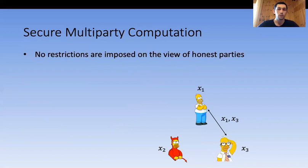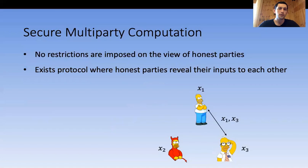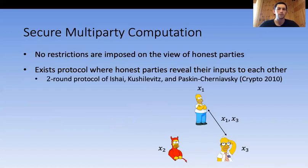You might say that no one actually constructs such protocols. But in fact there are protocols that utilize this — for example, the two-round protocol of Isha et al., which uses the fact that honest parties can reveal information to each other in order to minimize the round complexity.